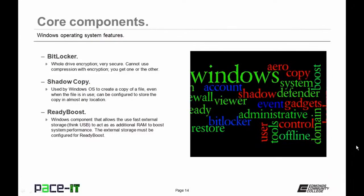Microsoft introduced Shadow Copy, used by Windows operating systems to create a copy of a file even when it's in use. It can be configured to store the copy in almost any location, and it's a great way to roll back what you're working on.